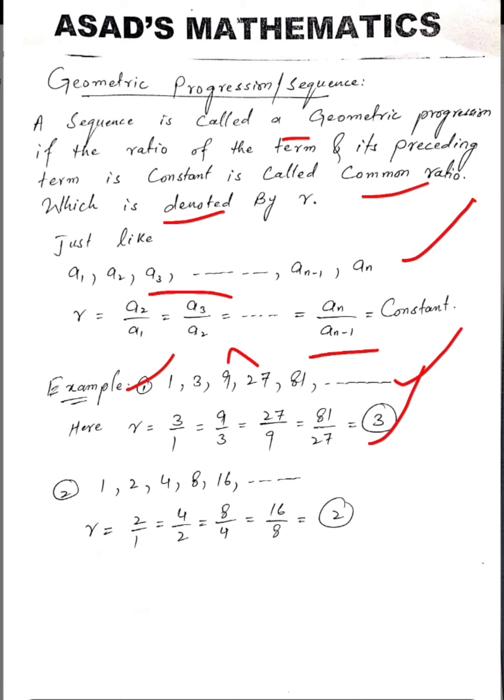Now the second example: 1, 2, 4, 8, 16. We find the ratio between all the consecutive terms.